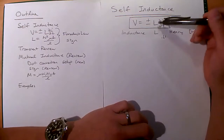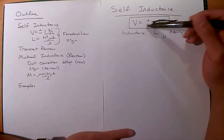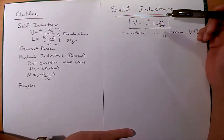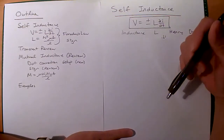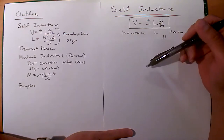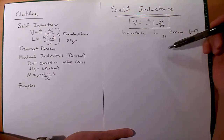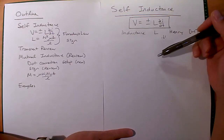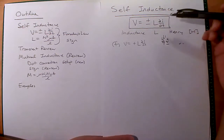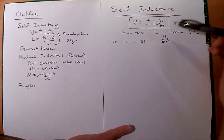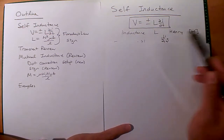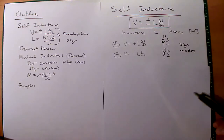So self-inductance — plus or minus, the same plus or minus that we do for Ohm's law for power. You look at the current direction and see: is it going to the positive terminal? If it is, use positive; otherwise use the negative. L is the inductance, with units of Henrys.